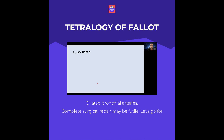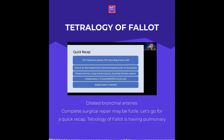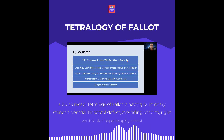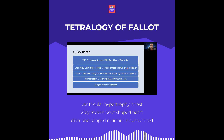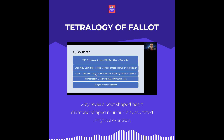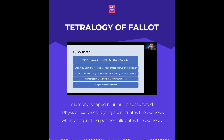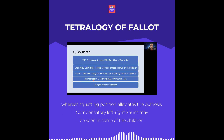Quick recap: Tetralogy of Fallot comprises pulmonary stenosis, ventricular septal defect, overriding aorta, and right ventricular hypertrophy. Chest X-ray reveals a boot-shaped heart. A diamond-shaped murmur is auscultated. Physical exercise and crying accentuate cyanosis, whereas squatting alleviates it. A compensatory left-to-right shunt may be seen in some children, and surgical repair is indicated and prolongs survival.